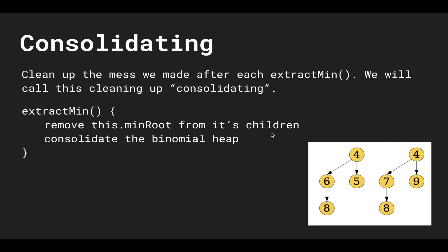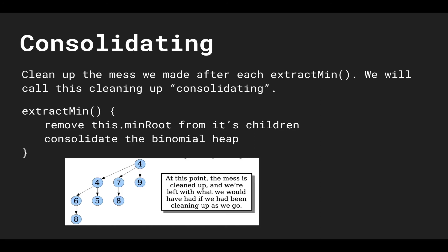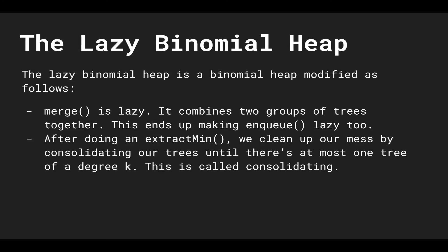We repeat the process and see we still have two trees of degree one, so we link them with four as the new parent since four < six, forming another degree-two tree. We then have two trees of degree two, so we link them — since four equals four it doesn't matter which is root — forming a binomial tree of degree three. At this point the mess is cleaned up: there is at most one binomial tree of degree k. We're left with what we would have had if we'd been cleaning up eagerly all along, but we only did it after extracting the minimum node.